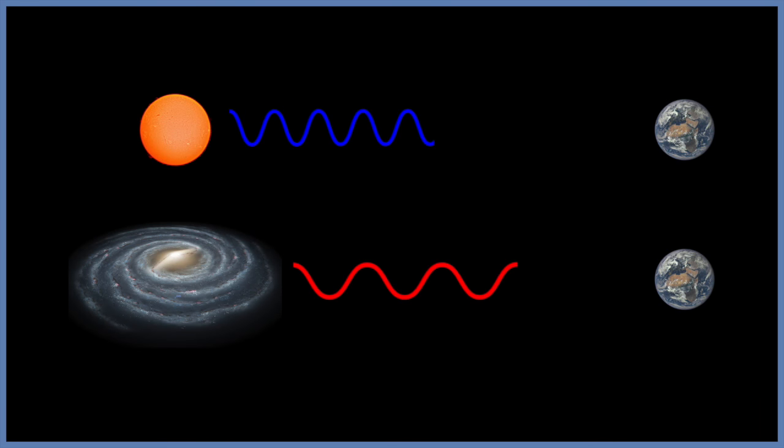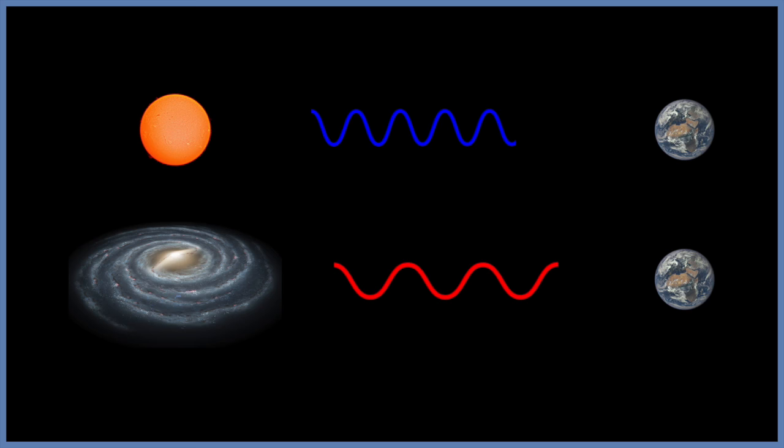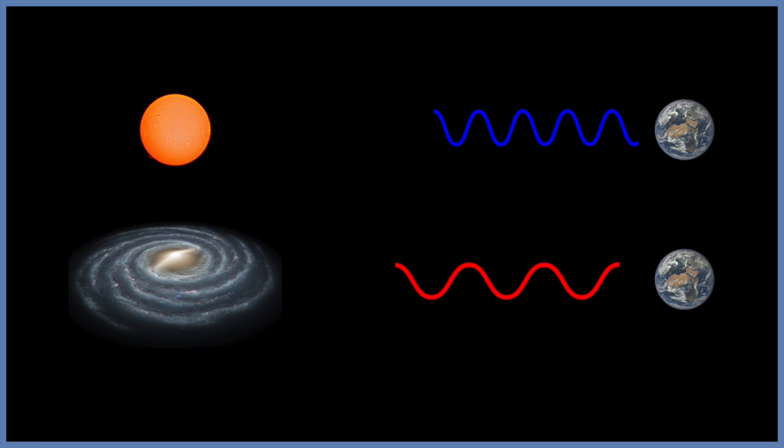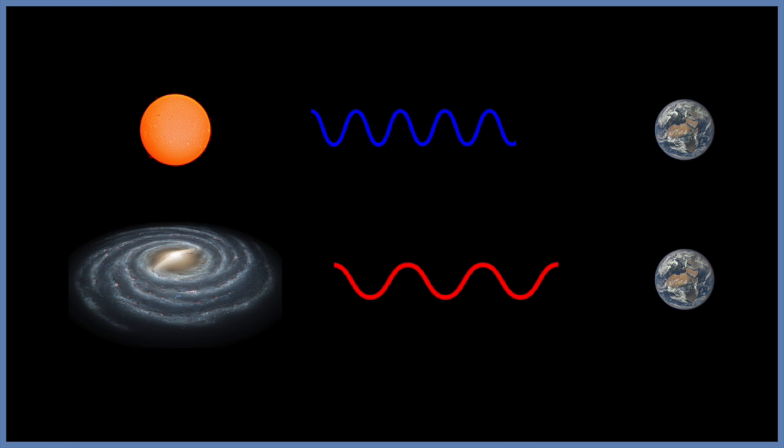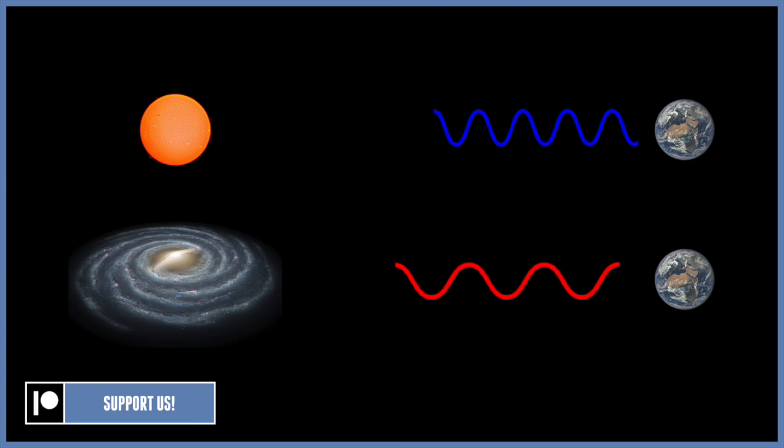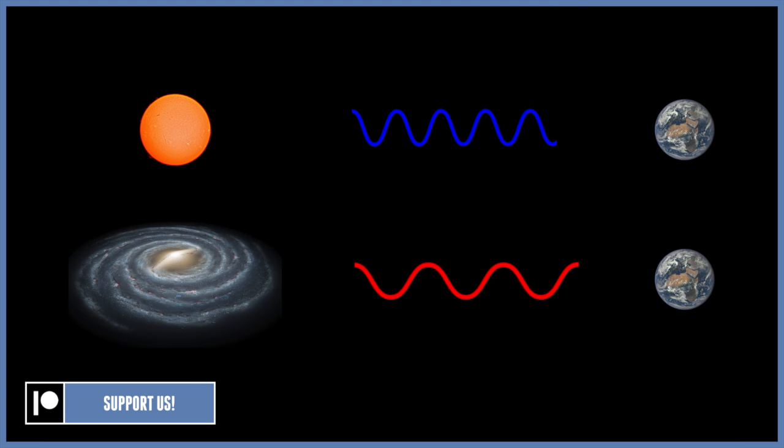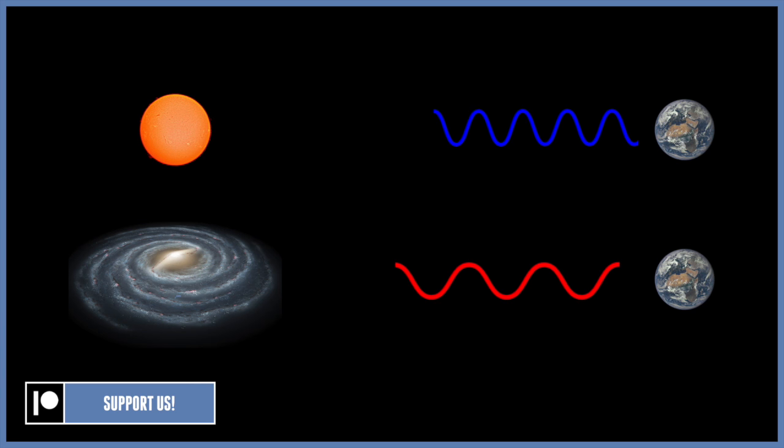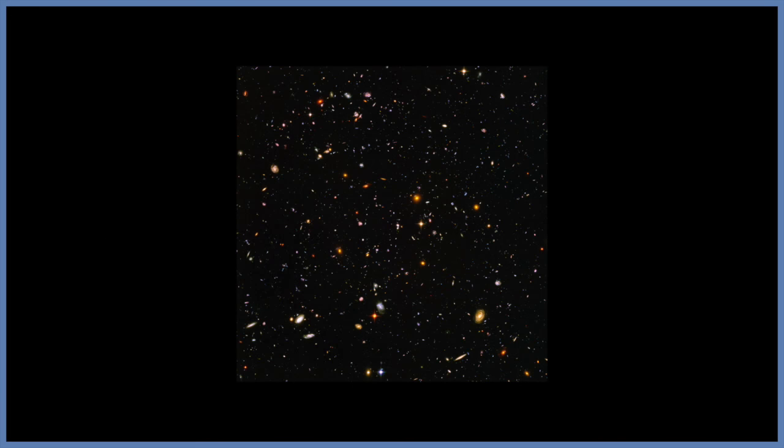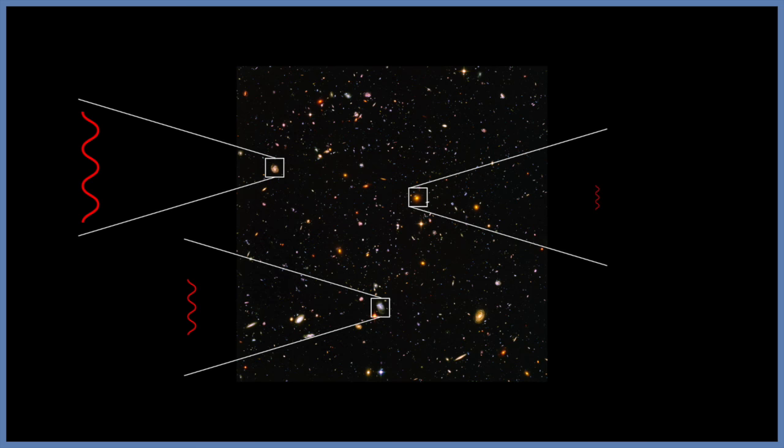So how do we calculate distance by using redshift? Well, the light from the most distant objects in our universe is very redshifted as seen from Earth. And this is basically because the universe is expanding. The further away a galaxy is, the faster it is moving. And the faster a galaxy moves, the more its light is redshifted. So by measuring the amount of redshift is a great way to measure the distance of the galaxy relative to Earth.